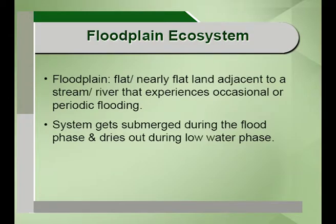What do we mean by floodplain ecosystems? As the name indicates, a floodplain is a flat or nearly flat land which is adjacent to a stream or a river and experiences periodic flooding, maybe even due to rainfall. The whole ecosystem gets submerged during the flood phase and dries out during the low water phase.